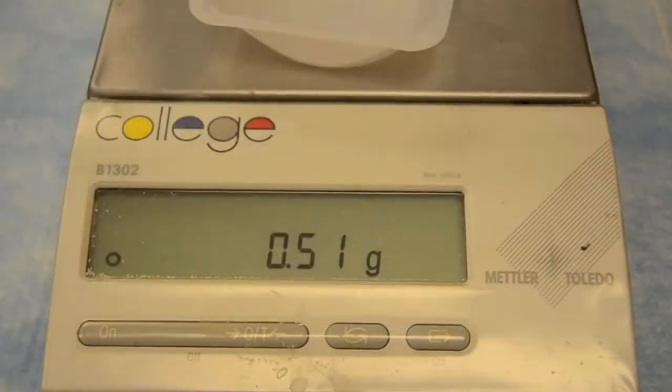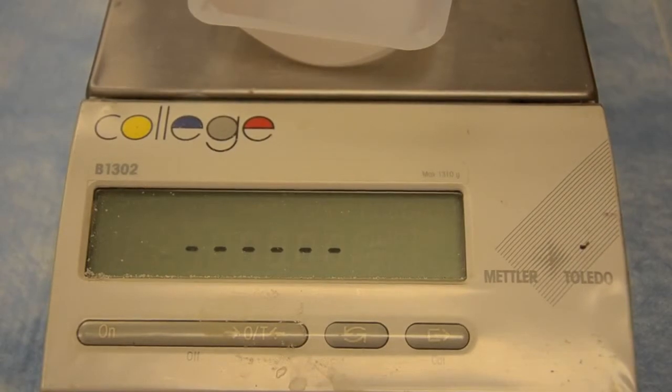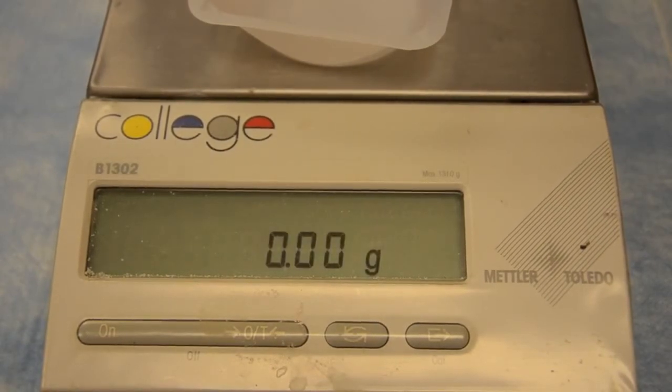You'll put the weigh boat on the balance, let it measure it, then press the tear button. This resets the balance to zero. That way, you're only measuring whatever you put into the weigh boat.